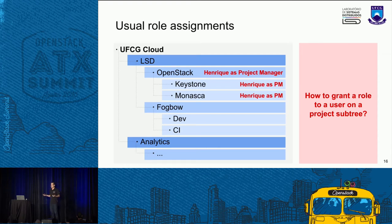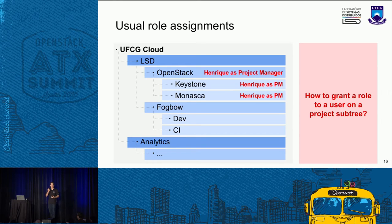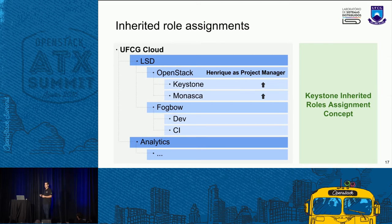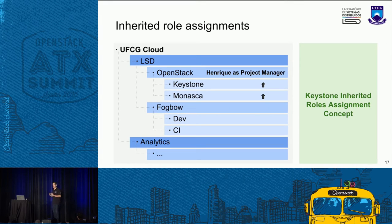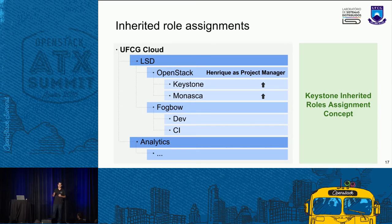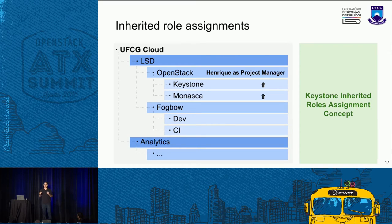Another scenario: Andre is our professor, so he needs access to all projects in our lab. We would need to grant the role for every project in our cloud — a lot of entries for the same user. Our idea was to implement Hierarchical Inherited Role Assignment. With inherited role assignment, we can grant the role for Henrique at the OpenStack level and say this role will be inherited for every sub-project in the sub-tree. So Henrique will automatically have access to Keystone, Monasca. If someone creates a new project, Henrique automatically gets access. The same for Andre: granting an inherited role at the domain level gives access to every project in the domain. This reduces entries and makes it easier for operators to control.